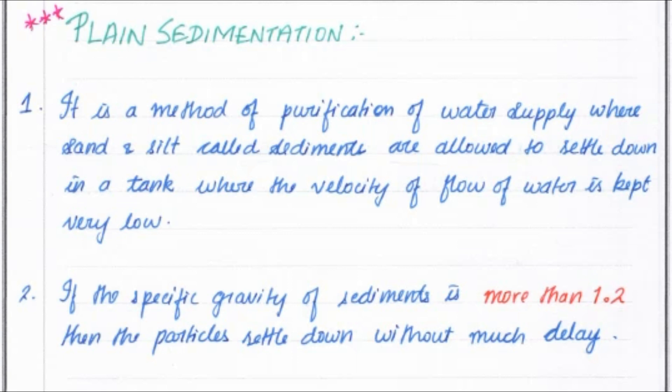It is a method of purification of water supply where sand and silt, called sediments, are allowed to settle down in the tank where the velocity of flow is kept very low or nil. Whenever the velocity of flow is very less, the particle settles down easily. But when the velocity is very high, the particle remains suspended for a long period. That is why the velocity is kept very low in the sedimentation tank.